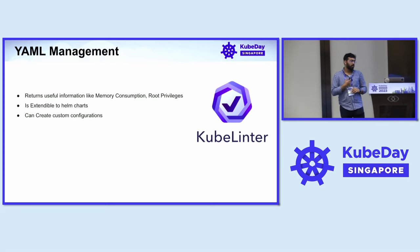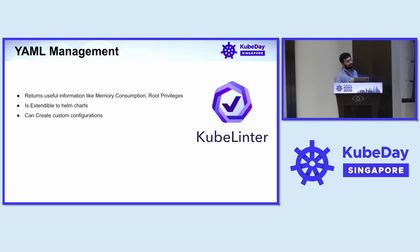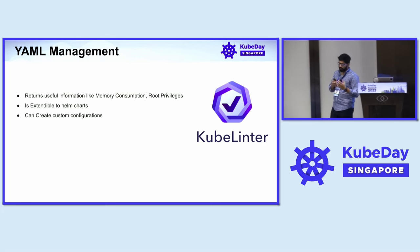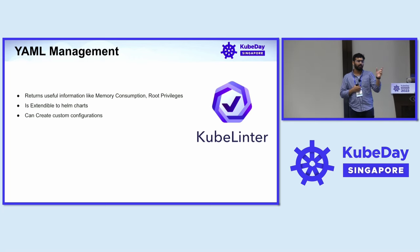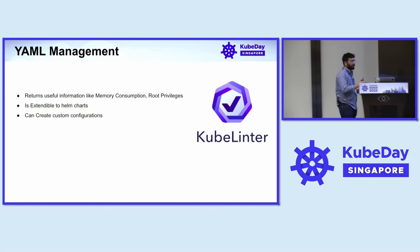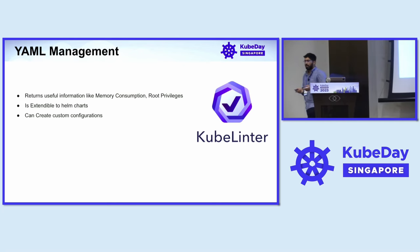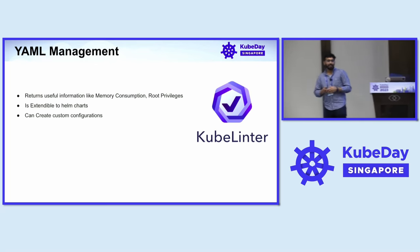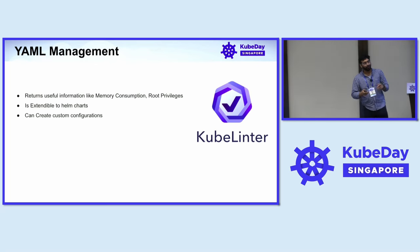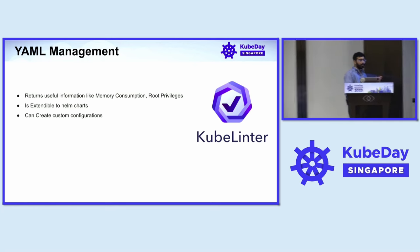For YAML management, we use KubeLinter. You just run the command 'kube-linter lint' followed by the YAML file or Helm chart and it identifies misconfigurations and returns the output. If you're an experienced YAML developer you may not need this, but if you're a DevOps or cloud engineer, KubeLinter will be very helpful.